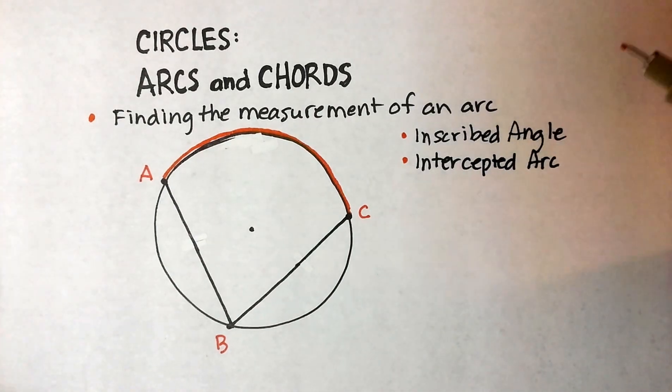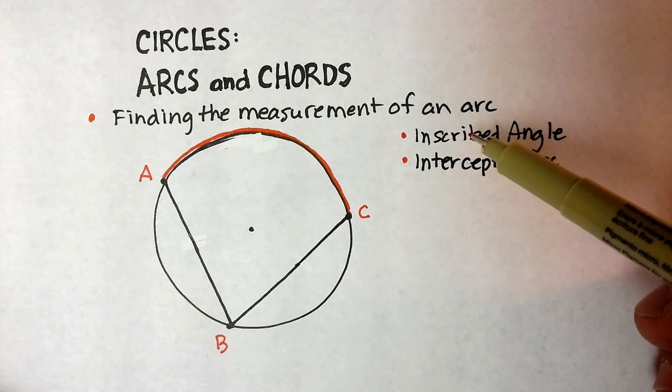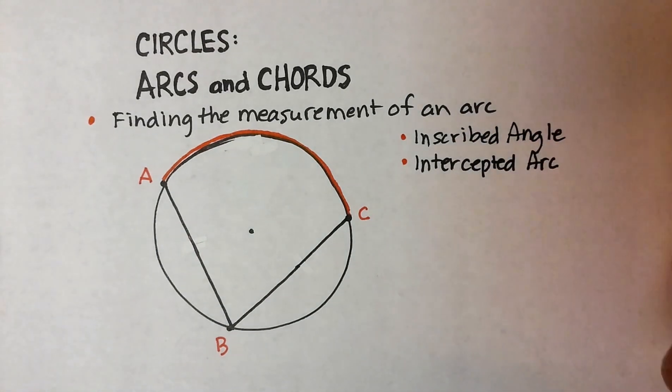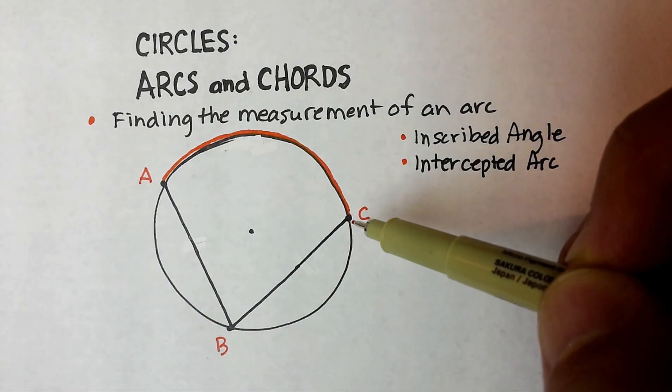So let's do this a little bit backwards. Let's actually start in the middle. Let's start with an inscribed angle. What is an inscribed angle? The angle you see here is inscribed.